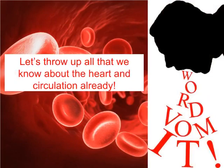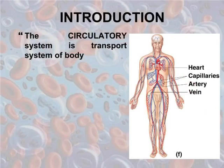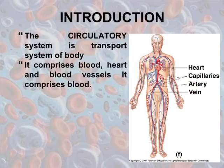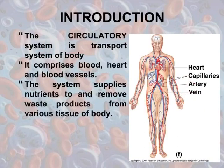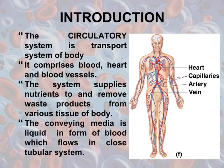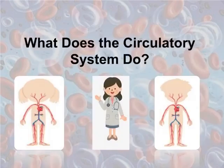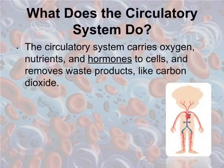Let's throw up all that we know about the heart and circulation already. The circulatory system is the transport system of the body. It comprises blood, heart, and blood vessels. The system supplies nutrients to and removes waste products from various tissues of the body. The circulatory system carries oxygen, nutrients, and hormones to cells, and removes waste products like carbon dioxide.